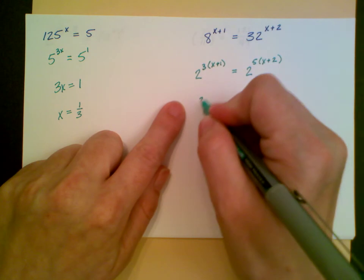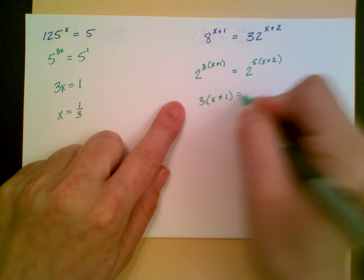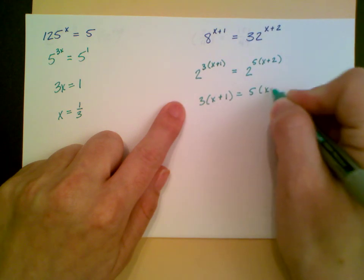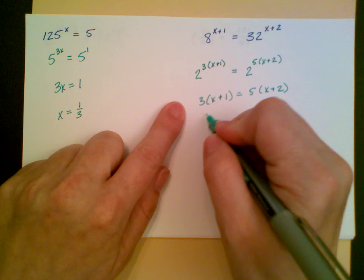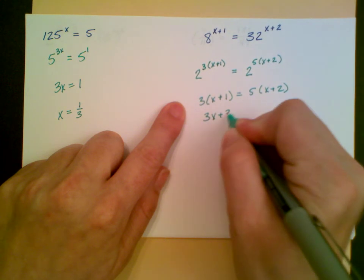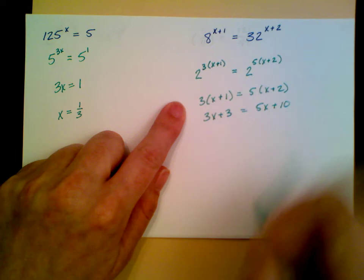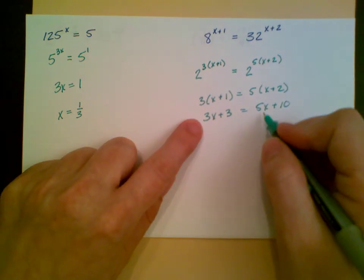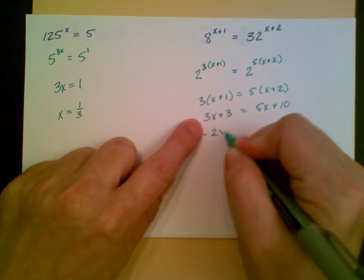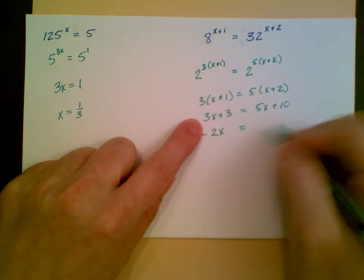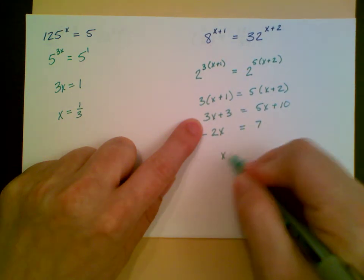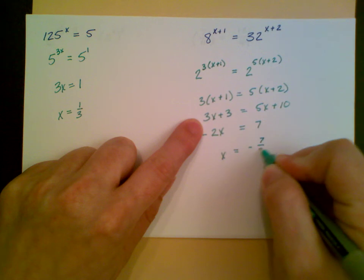I'm going to distribute now. So I have negative 2x is equal to 7, so x is equal to negative 7 halves.